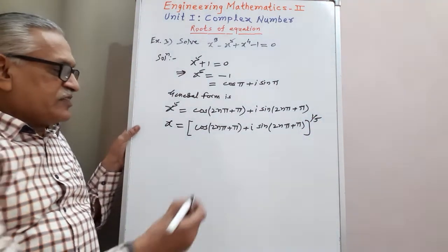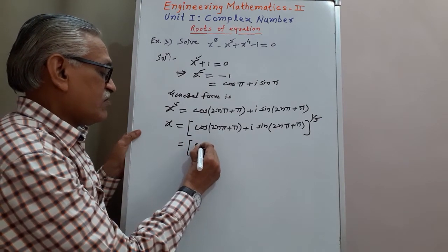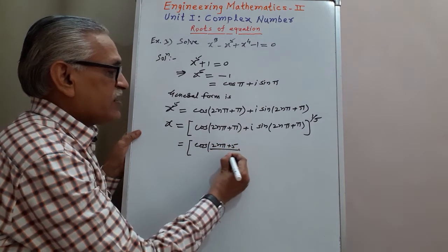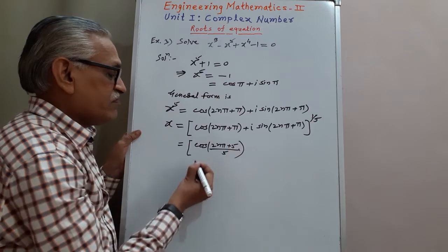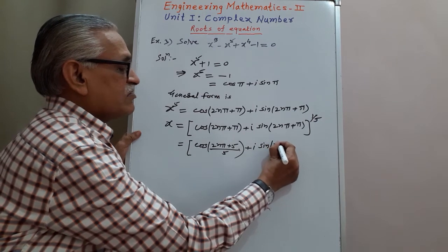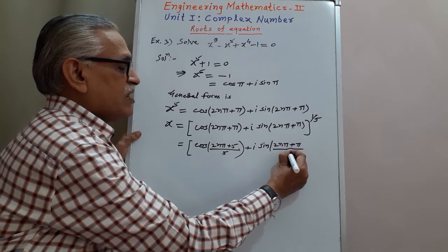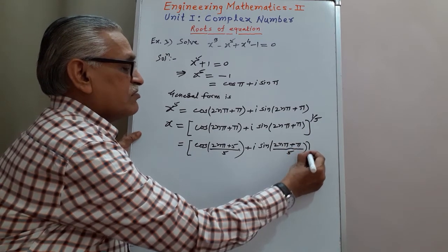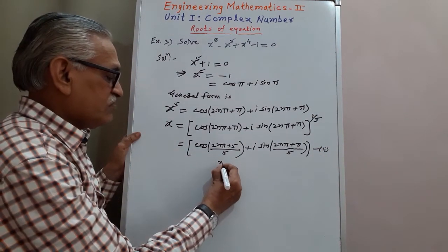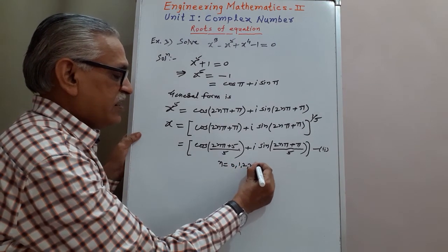Applying De Moivre's theorem, x = cos((2nπ + π)/5) + i sine((2nπ + π)/5), where n equals 0, 1, 2, 3, and 4.